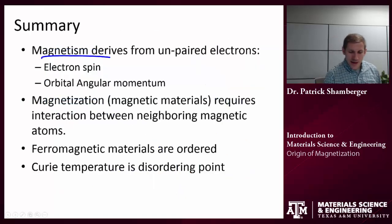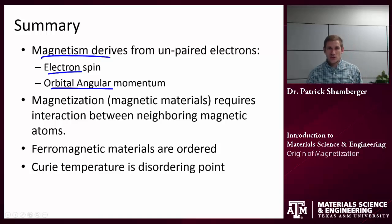So in summary, magnetism is deriving from unpaired electrons, and there are two contributions. There's an electronic spin, and there's an orbital angular momentum contribution. And these two things can interact and can lead up to the magnetic moment on a given atom or on a given ion.